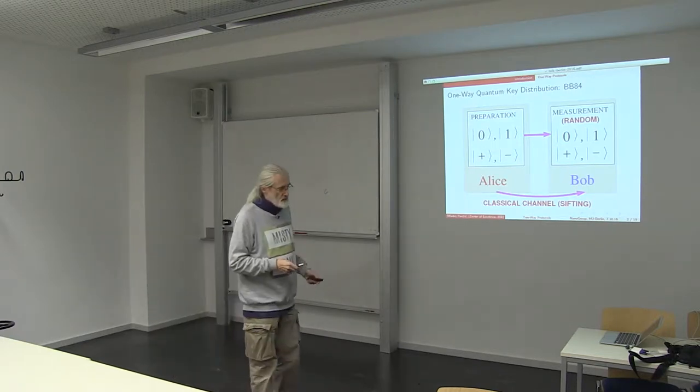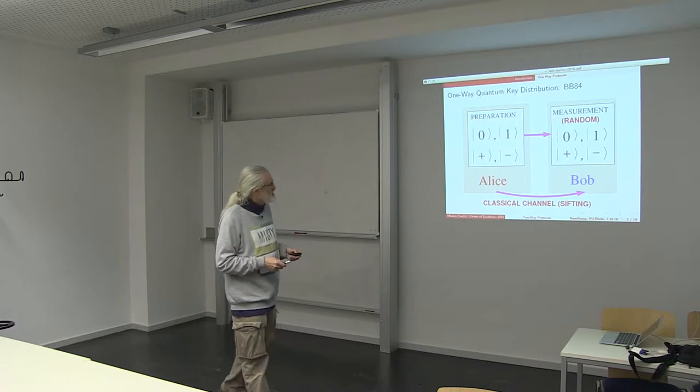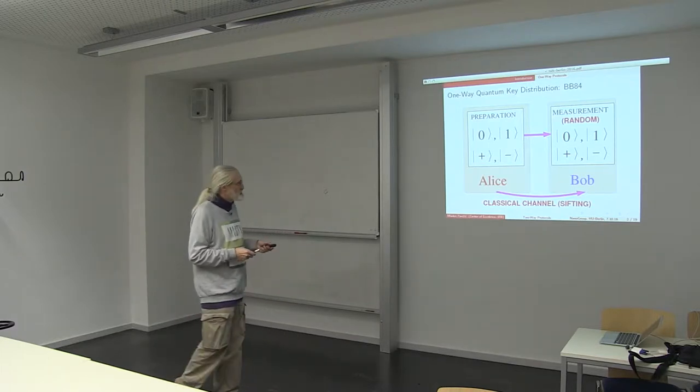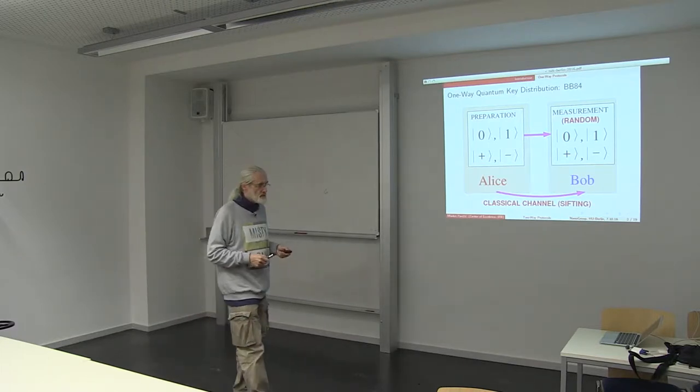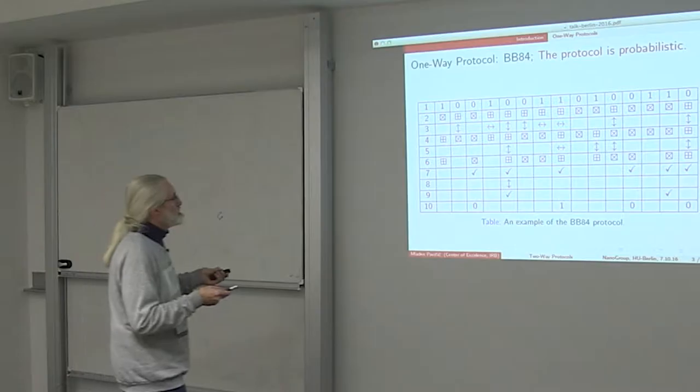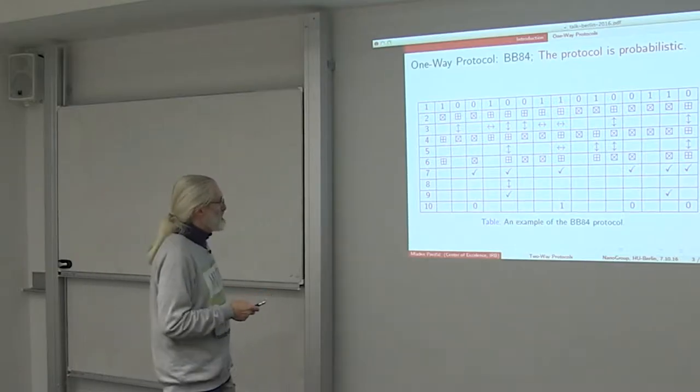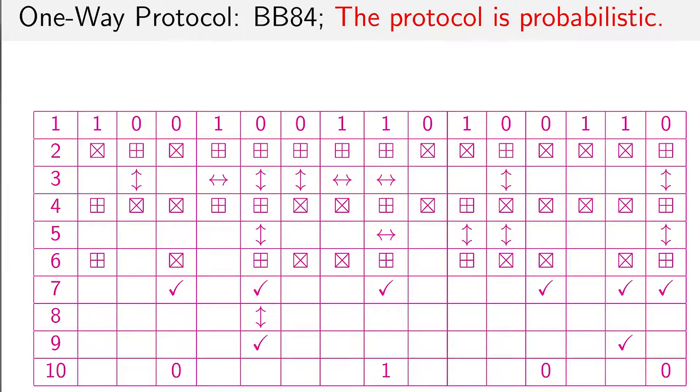They sift their messages so as to keep just half of them. The protocol is therefore probabilistic, and here is the scheme which is well known of proper basis orthogonal and diagonal.